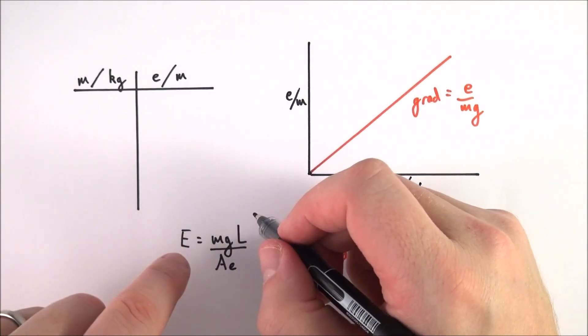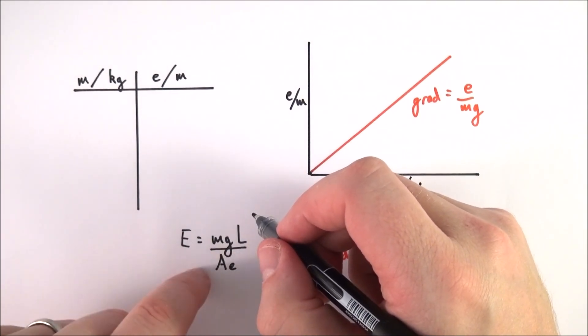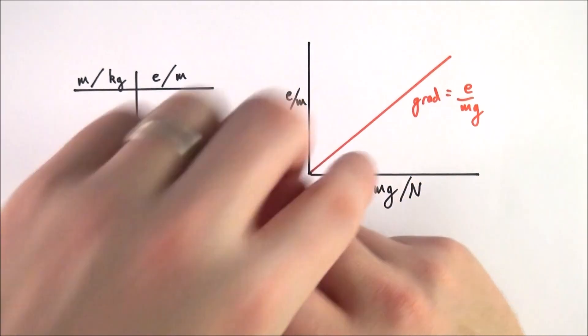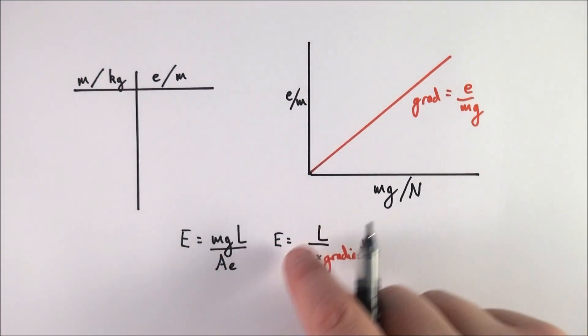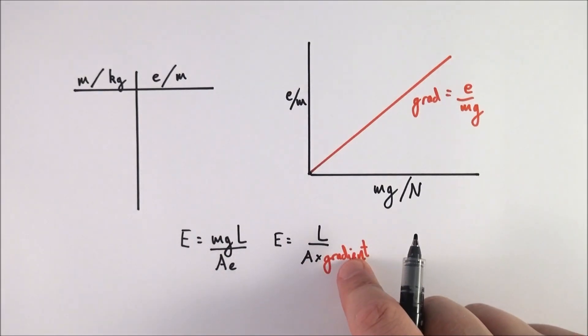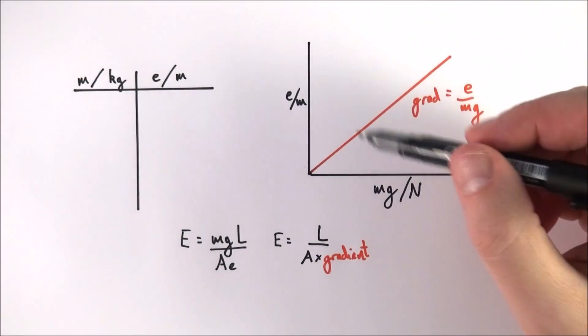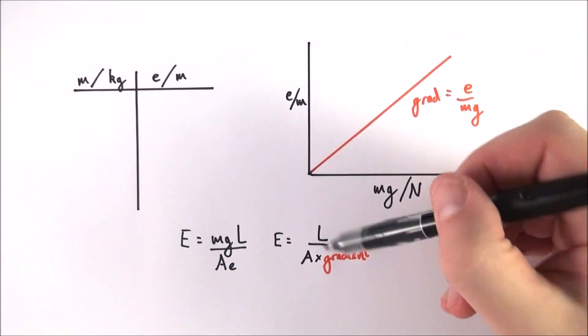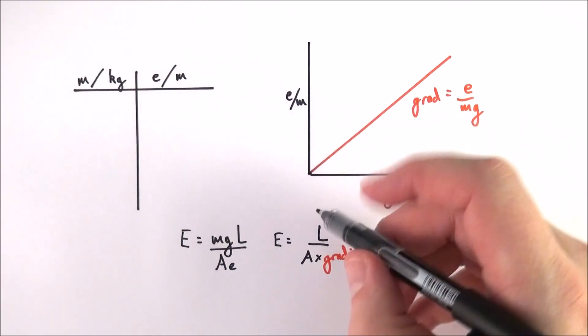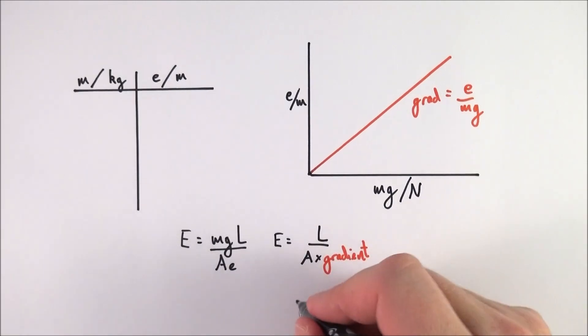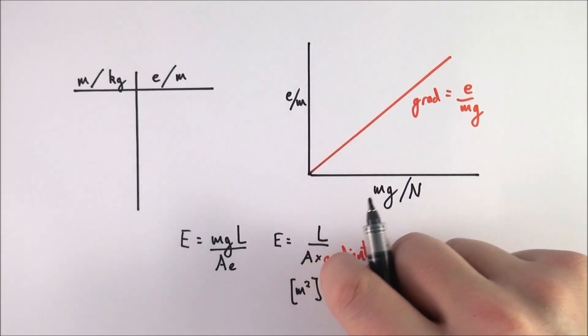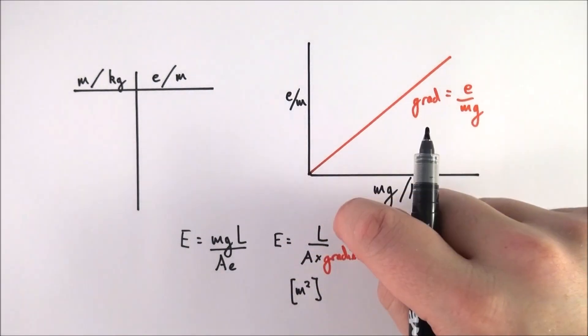So previously in the video I said that Young's modulus is equal to mgL over Ae and if we think about what this means here in terms of the gradient we can also write that the Young's modulus is equal to L over A multiplied by the gradient because the gradient is equal to e divided by mg. What that means is that once you've worked out your gradient you basically have your starting length of the wire, you have your cross sectional area of the wire that you've calculated.